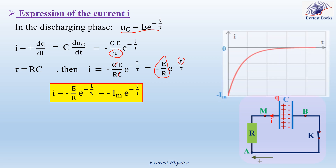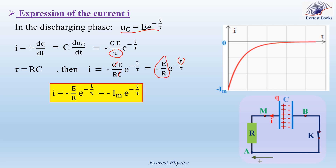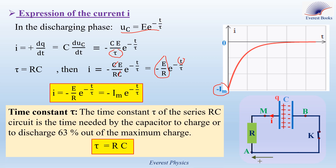Looking at the graph, at time 0 the current starts at a value of minus IM, and its absolute value then decreases to 0. The time constant tau of the series RC circuit is the time needed by the capacitor to charge or discharge 63% of the maximum charge, and its formula is tau equals R times C.